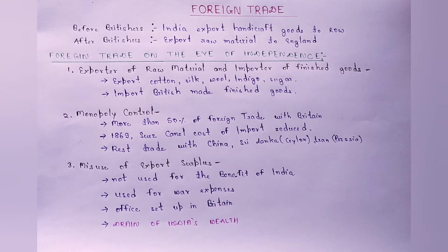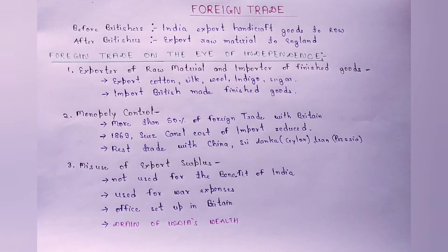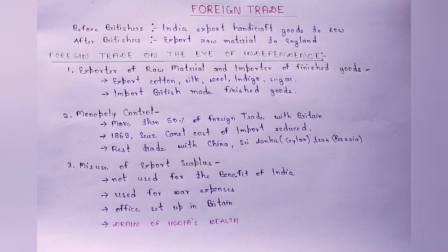Industries के लिए और फिर वहाँ पे जो finished goods हुआ करते थे वो फिर उसे import किया करते थे और फिर उसे India में sale किया करते थे। जो second feature है वो है monopoly control — जितना जो foreign trade था वो पूरी तरह से British के control में था, British ही पूरा trade को control किया करते थे। About 50% of foreign trade जो था वो सिर्फ और सिर्फ Britain के साथ हुआ करता था।